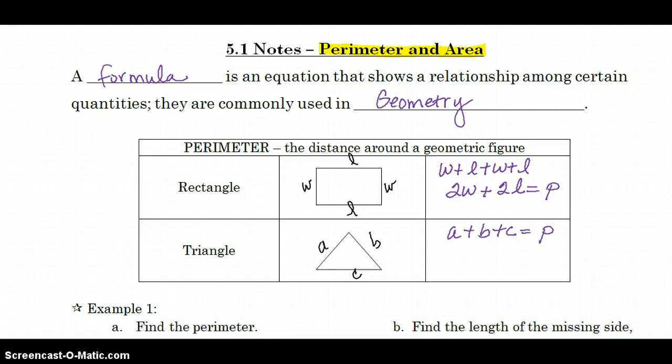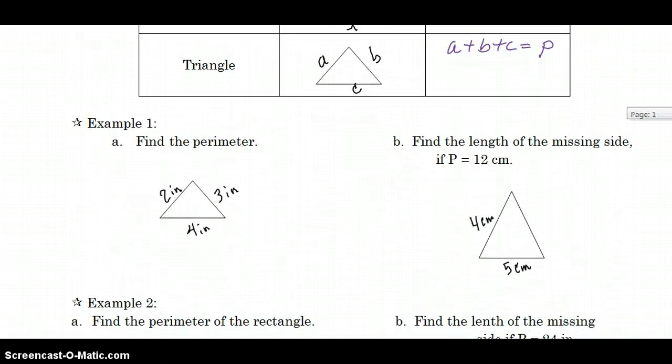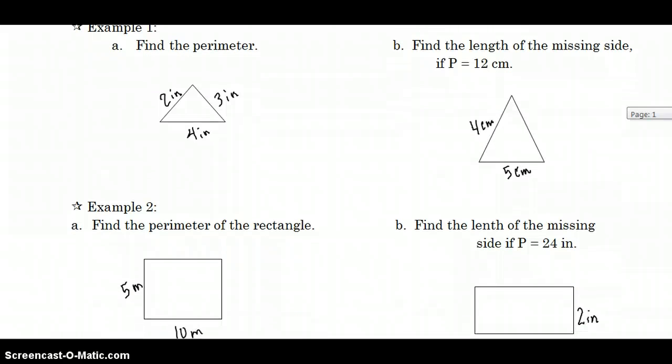So in Example 1, it asks us to find the perimeter. Example 1A is a triangle. So we'll just say 2 inches plus 4 inches plus 3 inches equals how many inches? So 7, 8, 9 inches.